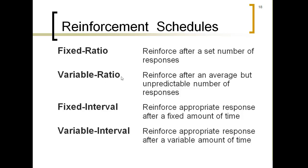With variable ratio, it's still about behaviors, but the person doesn't know how often they'll have to perform before getting the reward. You as the reinforcer-giver might have a plan, but the individual doesn't. For example, I give my son candy after five problems, then after two, then after six — a different number each time. He doesn't know because it's not consistent.